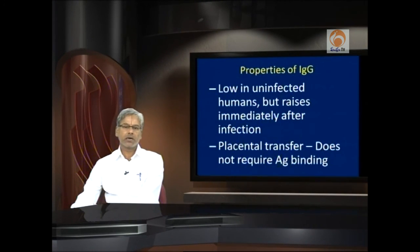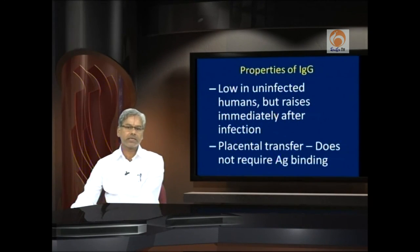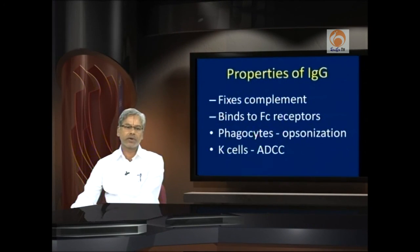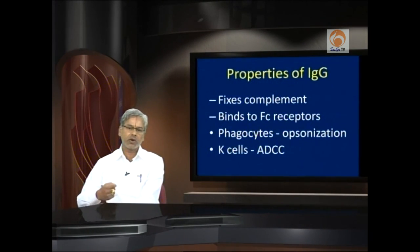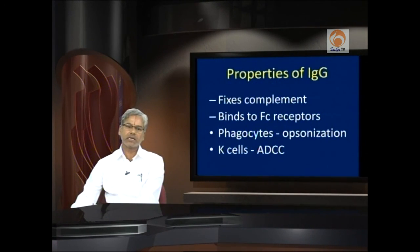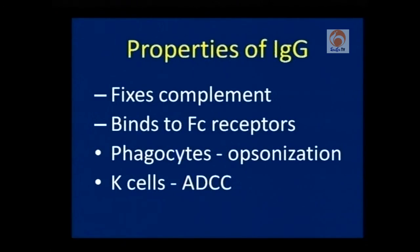IgG is low in concentration in uninfected humans but raises immediately after infection. It is the only antibody that can cross the placenta and does not require antigen binding to do so. It can fix complement proteins and bind to FC receptors of immune cells. When bound to phagocytes, it causes opsonization — a process involving opsonins, a class of proteins that weaken the pathogen. When killer (K) cells are bound to IgG molecules, they become antibody-dependent cytotoxic cells, rendering us immune.